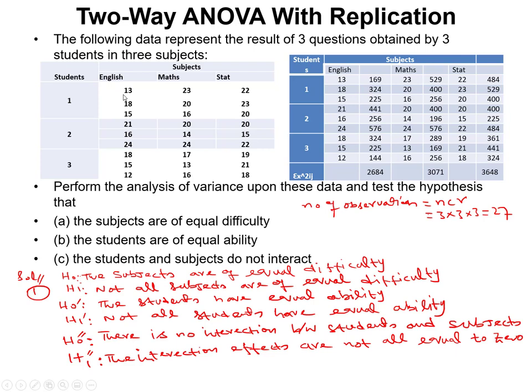We want to check the interaction between students and subjects, since students and subjects are both independent variables and marks are the dependent variable. The first null hypothesis: subjects are of equal difficulty — meaning all column means are the same. The alternative: not all subjects are of equal difficulty.